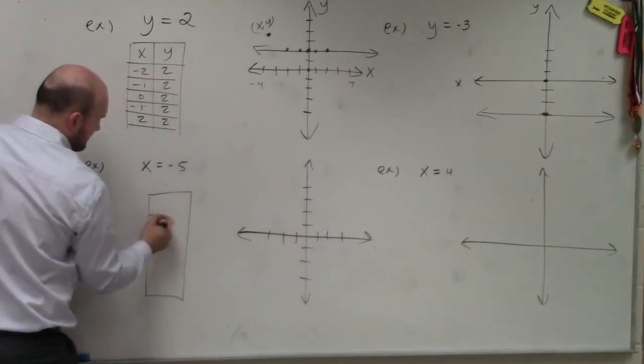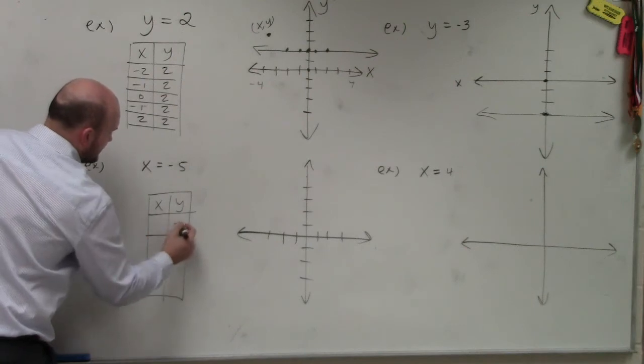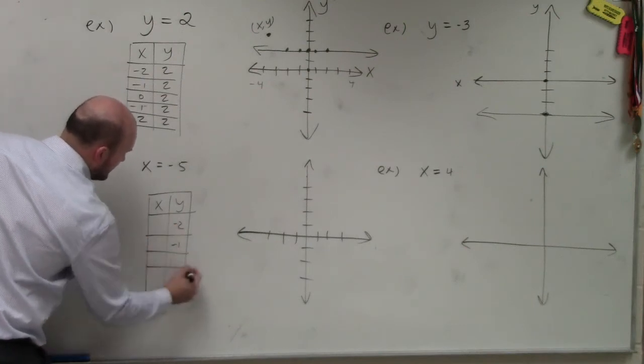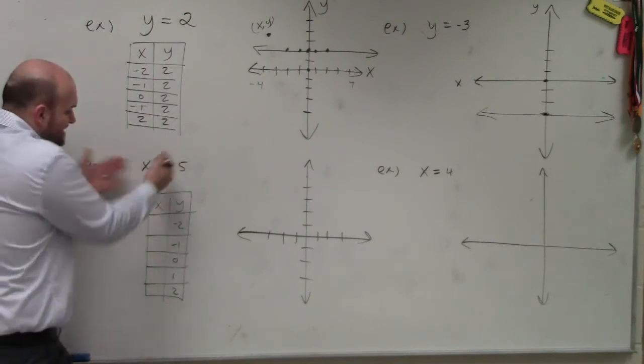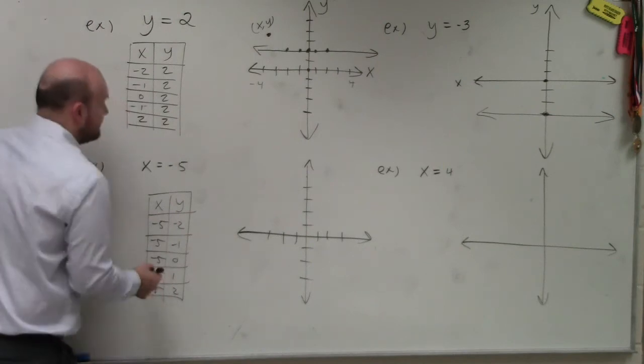So if I was going to create a table, again, the same thing. But rather than looking at the points on the x-axis, I'm going to choose points on the y-axis. And again, let's just pick the same points, but this time for y. So I would do negative 2, negative 1, 0, 1, and 2. Well, again, in this case, x is equal to negative 5. It doesn't matter what the value of y is. x is always equal to negative 5.